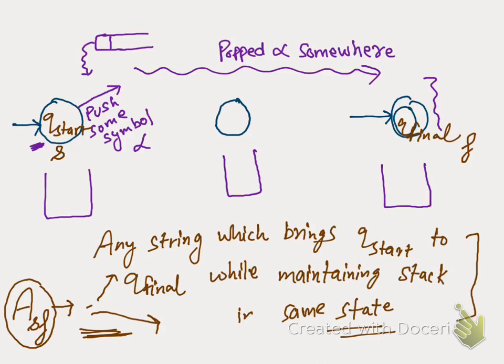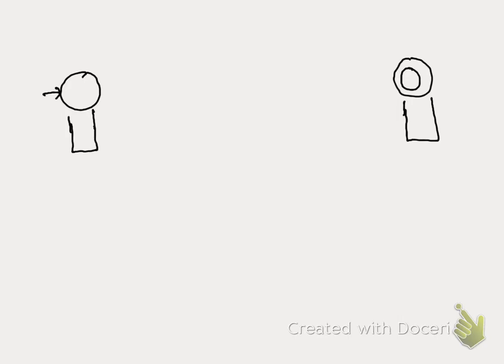Let's see how we come from q_start to q_final. Starting at q_start with an empty stack, we read some terminal 'a' from the input tape and push alpha onto the stack. On reading 'a', alpha is pushed here.